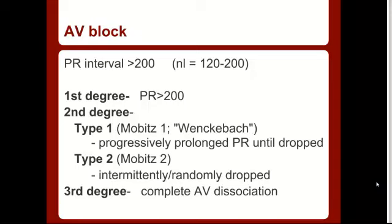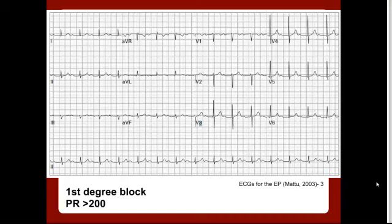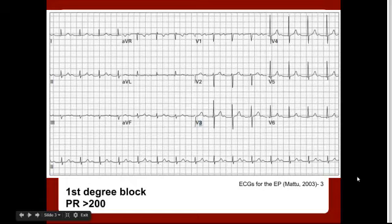I think the best way to go through each of these is to give an example of each one. I got these EKG examples from Amal Mattu's ECGs for the Emergency Physician, 2003 edition — great book, available on Amazon. This is an example of a first degree block. Looking at the rhythm strip at the bottom, you can see there's a P wave and a QRS, and it's definitely widened greater than 200. However, these are all fairly uniform as they go along, so we can call this a first degree block.